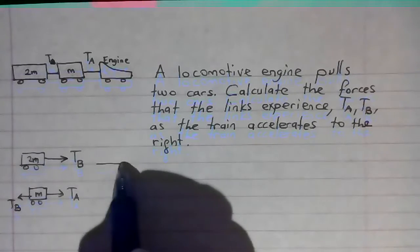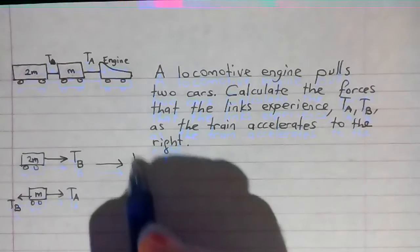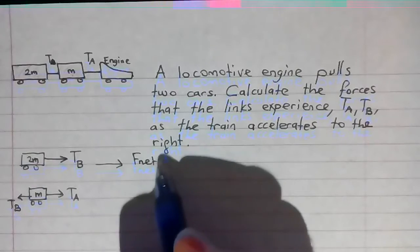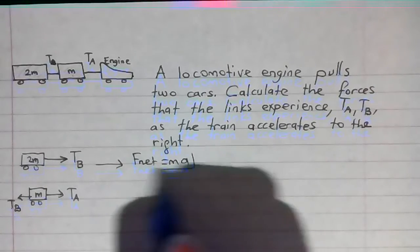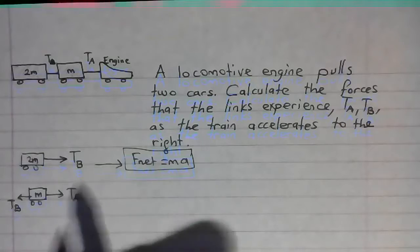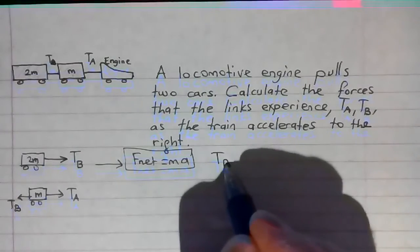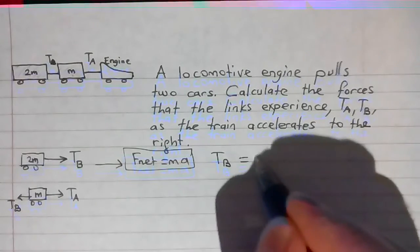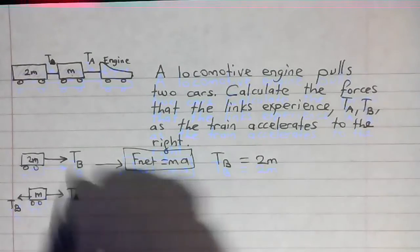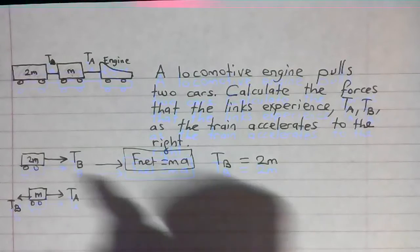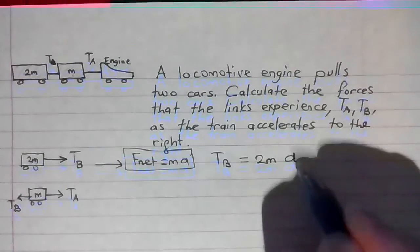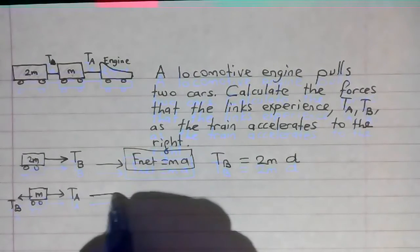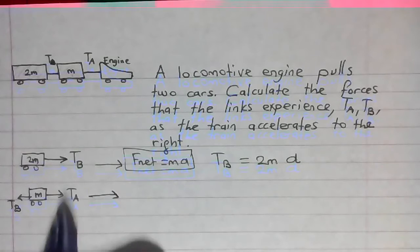Now we write Newton's second law for each case. For this, Newton's second law is F net equals MA. For F net in this case it's TB. M is 2M, then the acceleration is the acceleration of the system which is A.